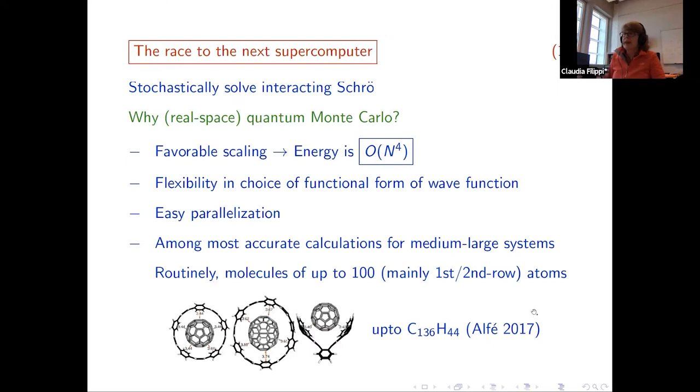So with the difference from standard quantum chemistry, we can use really any good idea. As I said, we have easier parallelization. And so far what we have done is we have given about the most accurate calculations for medium-large systems. So if you look in the literature, you mainly find calculations on first and second row, up to about 100 atoms. And here I show something actually in that region by Dario Alfè, and he was focusing on the computation of van der Waals interactions on quite large systems, like carbon 136, hydrogen 44, as an example. And the purpose of this was actually benchmarking for density functional theory.